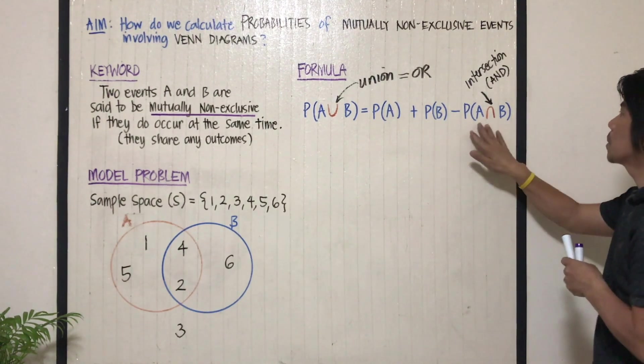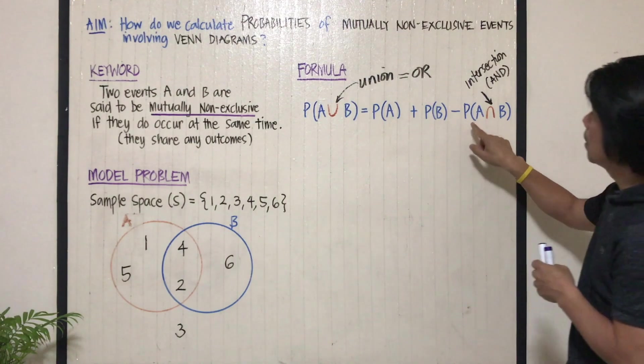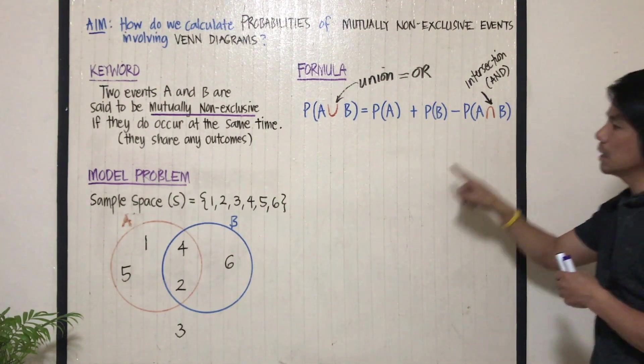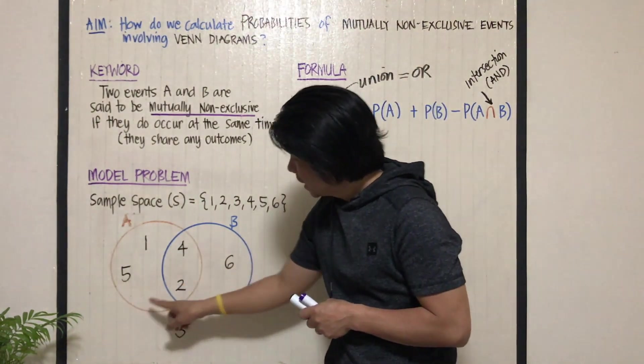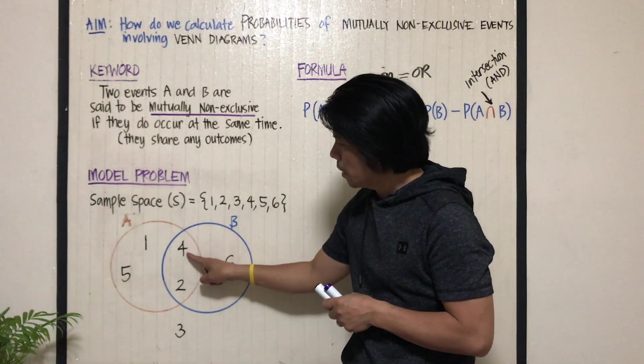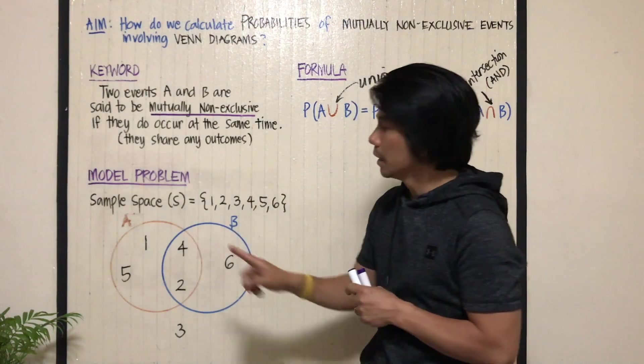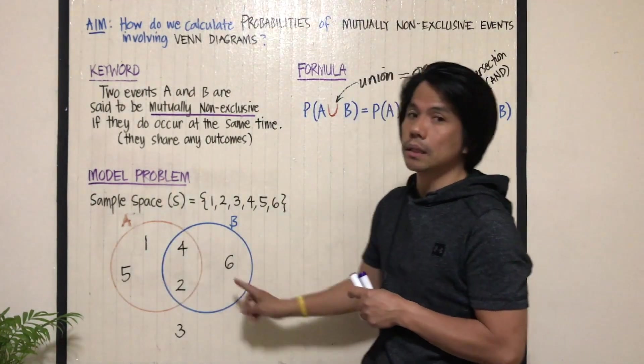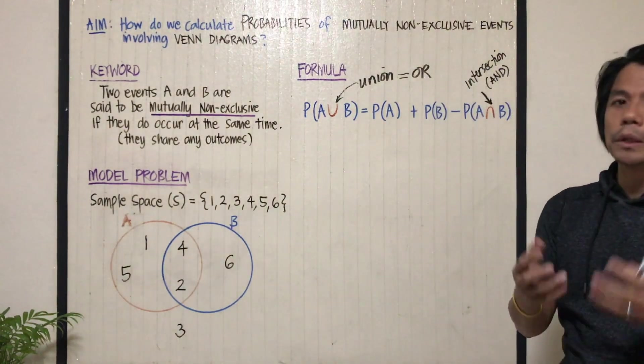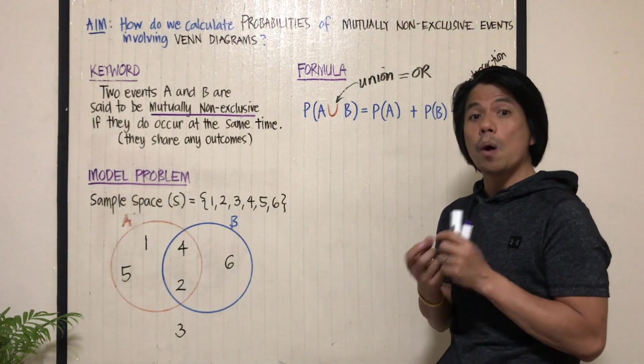Now, why are we subtracting the probability of A intersection B? Because if you notice, going back to this diagram, the intersection 4 and 2 happens twice inside circle A and inside circle B. So we don't want to count it twice.